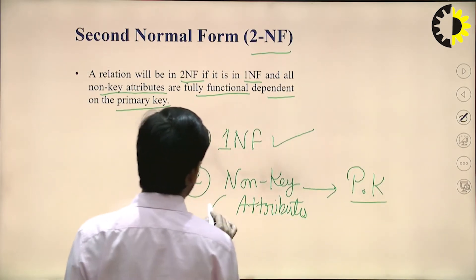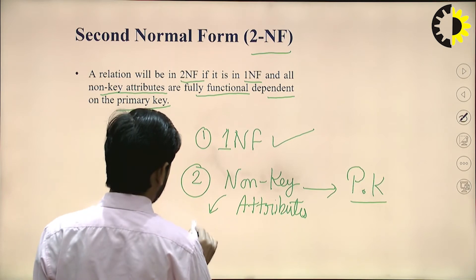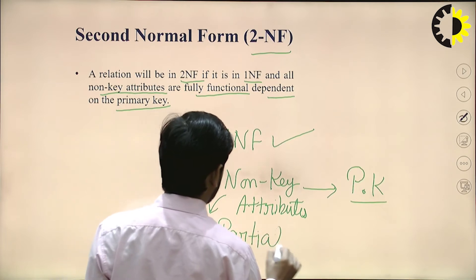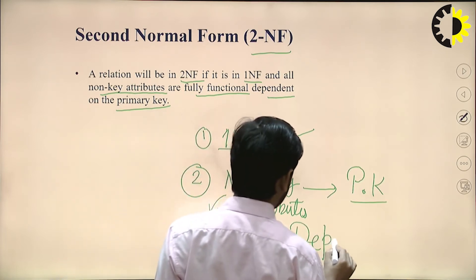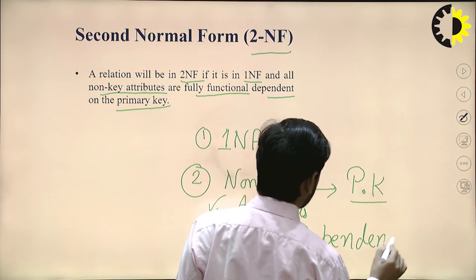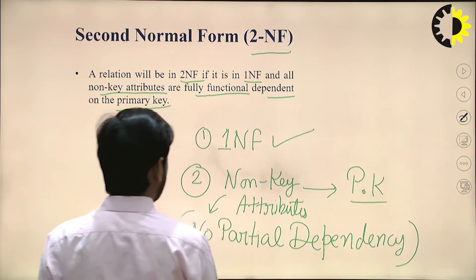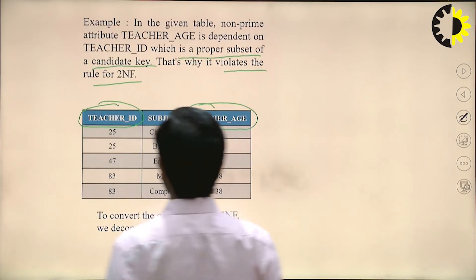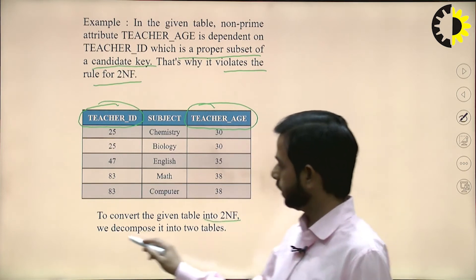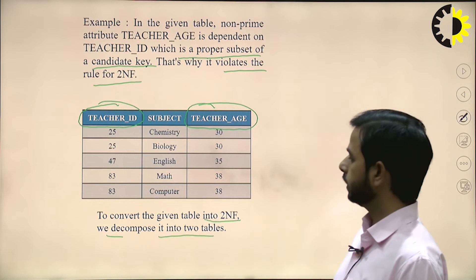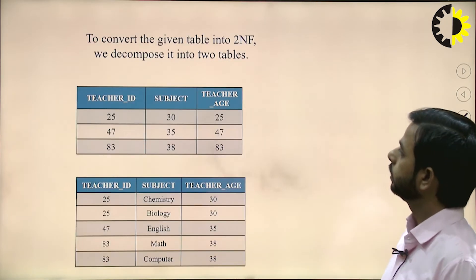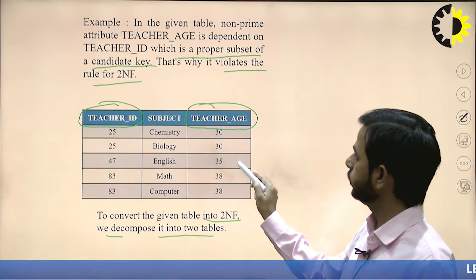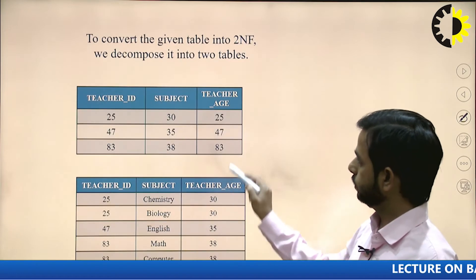There will be no partial dependency for the relation to be in 2NF — partial dependencies are not allowed. To convert the given table into 2NF, we decompose it into two tables. We decompose teacher ID, subject, and teacher age into two tables.